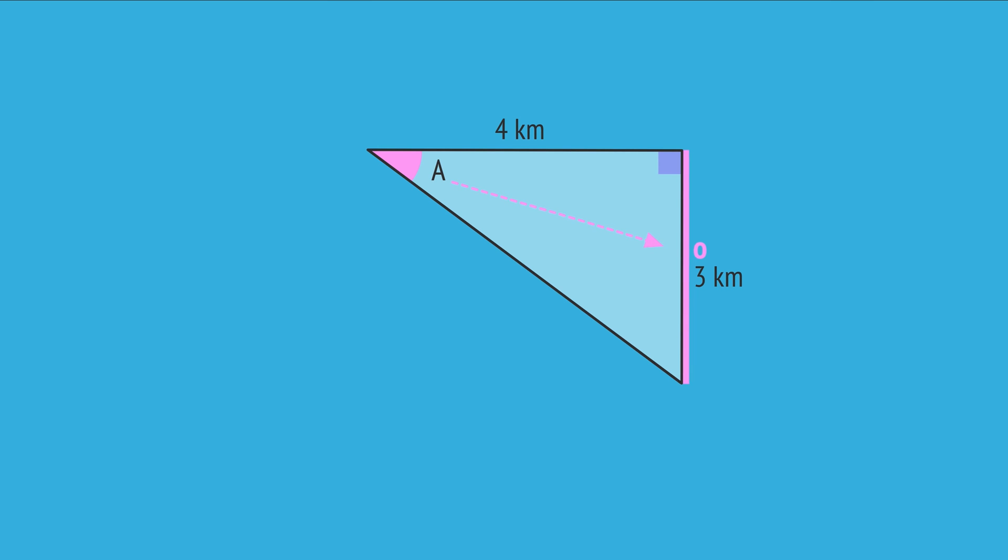We know the side opposite and the side adjacent. And so with these sides, we choose the tangent ratio. Substituting the values, we write tan A equals 3 over 4. And we use the inverse tangent function on a calculator to work out angle A, which gives us 37 degrees to the nearest degree.